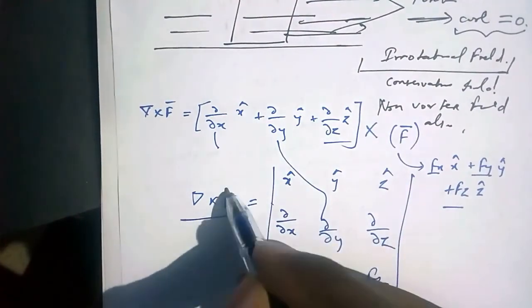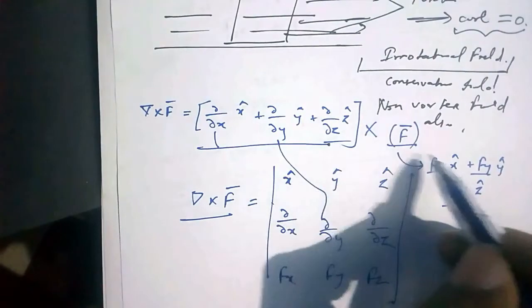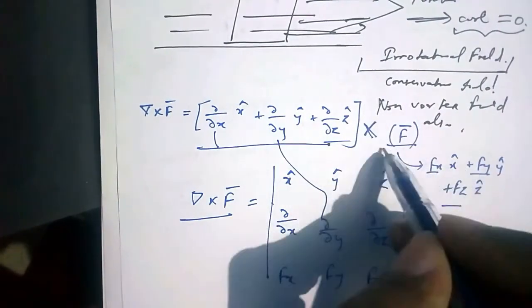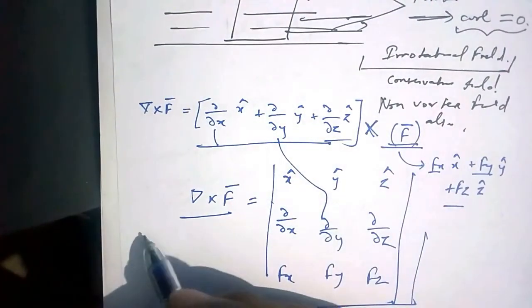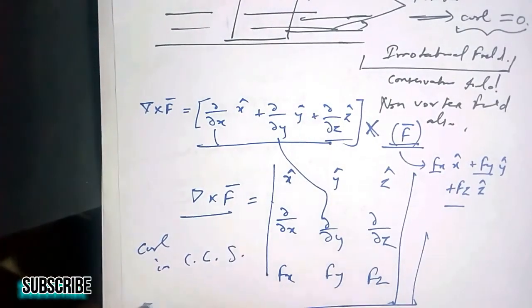So this is the curl of field. This differential operator is cross multiplied with the field. This is the formula of curl in Cartesian coordinate system.